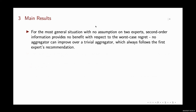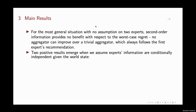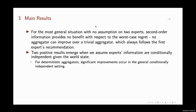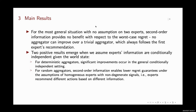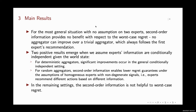For the most general situation, we find that signalling information provides no benefit. This is because no aggregator can improve over the trivial aggregator, which always follows the first expert's recommendation. Positive results emerge when we assume experts' information are conditionally independent given the world state. For deterministic aggregators, second-order information helps with just this conditionally independent assumption. But for random aggregators, we additionally need to assume experts are homogeneous and signals are non-degenerate, meaning experts recommend different actions based on different information. In the remaining settings, signal information is not helpful. Thank you.